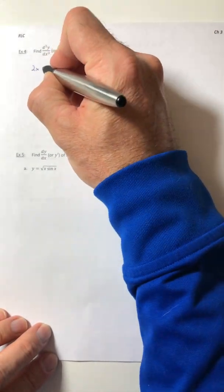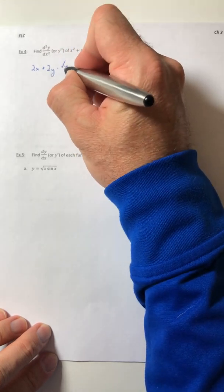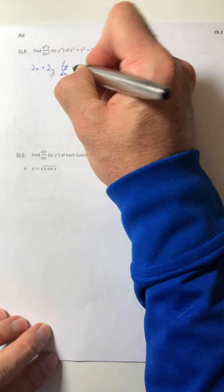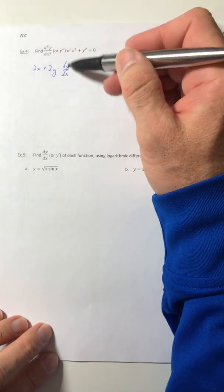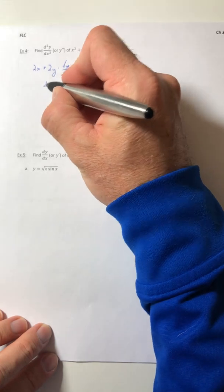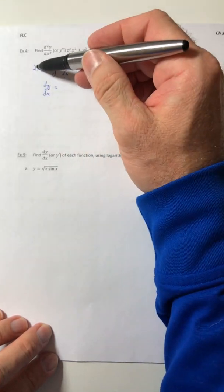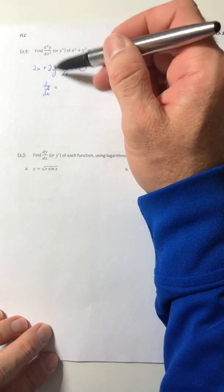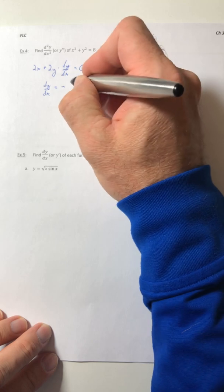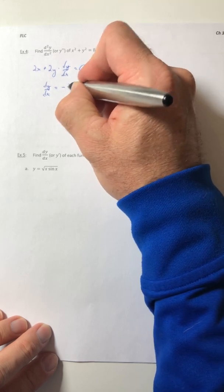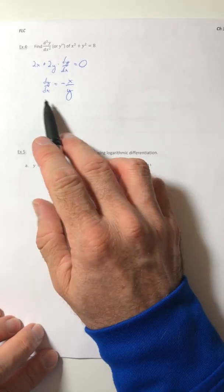So let's take 2x plus 2y times dy dx equals 0. Let's solve for the dy dx. We'll subtract the 2x over and then we're going to divide by 2y. So the twos cancel out and we end up with negative x all over y. So there's your first derivative.